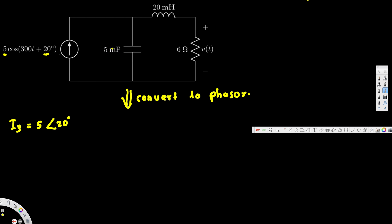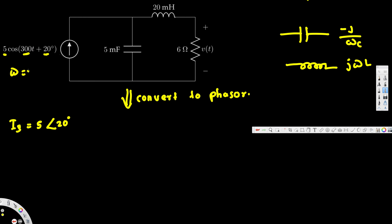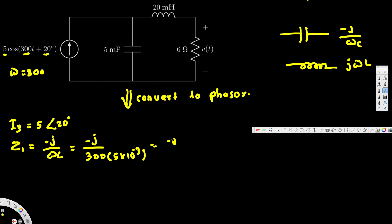When we convert this circuit, the capacitor, inductor, and resistor all become impedances. For the capacitor, when we convert it into phasor it becomes negative j over omega·C. In our case omega is 300 — that's the value multiplying t in the source. Let's call this Z1: Z1 equals negative j over (300 times 5×10⁻³), which simplifies to negative j times 2/3.